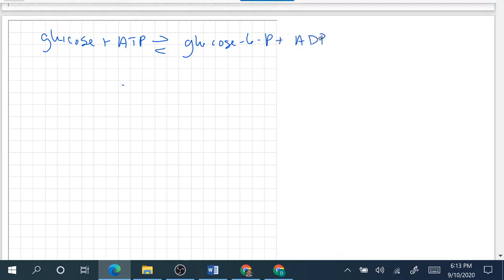That's our overall reaction. We need to calculate the delta G naught prime for this reaction. The trick here is that we can look up the delta G naught prime for some of the reactions that make up this overall reaction. This is a coupled reaction process.